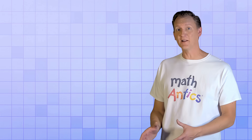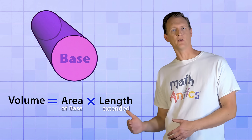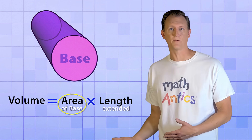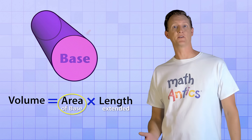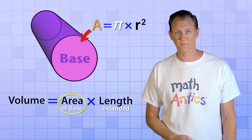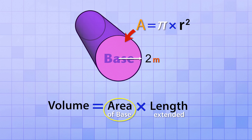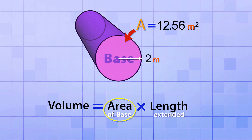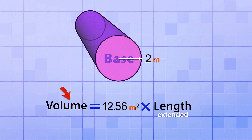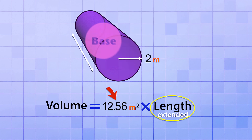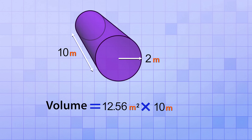Now let's find the volume of the cylinder, which is made by extending a circle. First, calculate the area of that circle using the formula pi times radius squared. The radius is 2 meters, so radius squared is 4 meters squared. Multiplying by pi gives us approximately 12.56 meters squared. To find the volume, we multiply that area by the length the circle was extended, which is 10 meters. So 10 meters times 12.56 meters squared gives us 125.6 meters cubed — the volume of this cylinder.